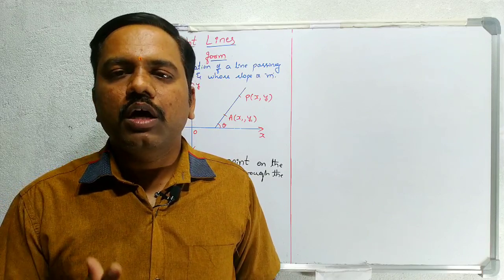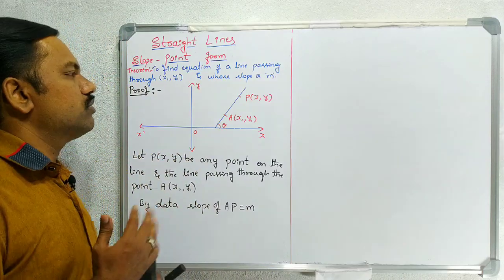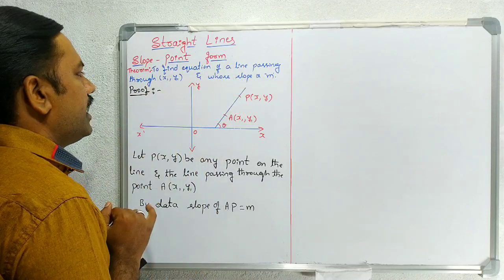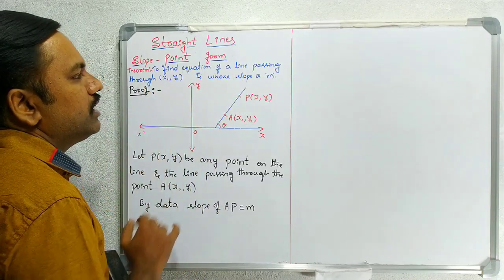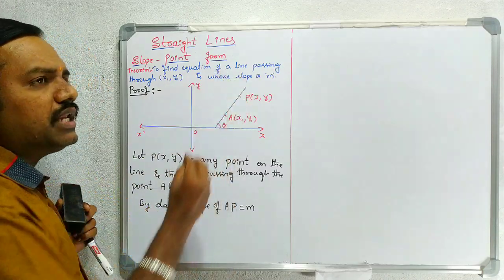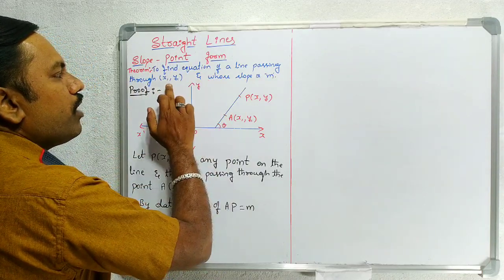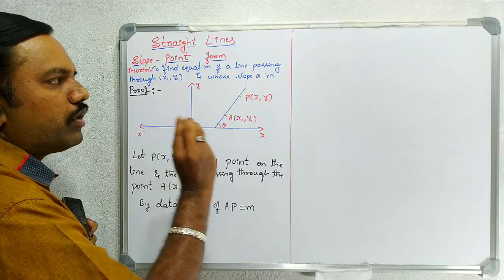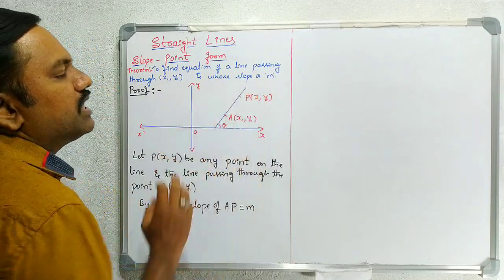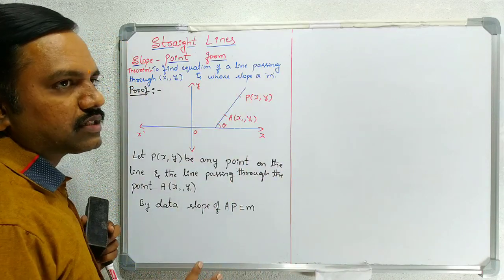So first derivation — we are going to do slope-point form. The statement of the theorem is: to find the equation of a line passing through point (x1, y1) and whose slope is m. We want to find the equation of that line. Our line passes through the point (x1, y1) and the slope of that line is m.